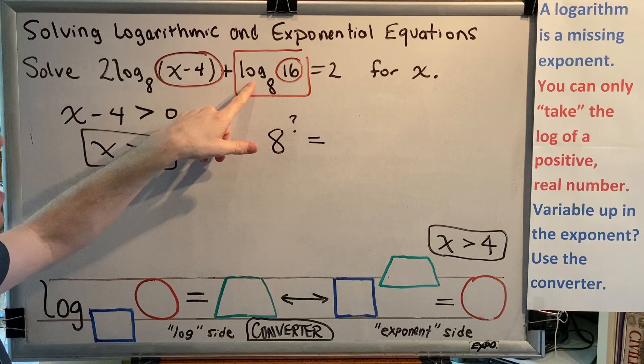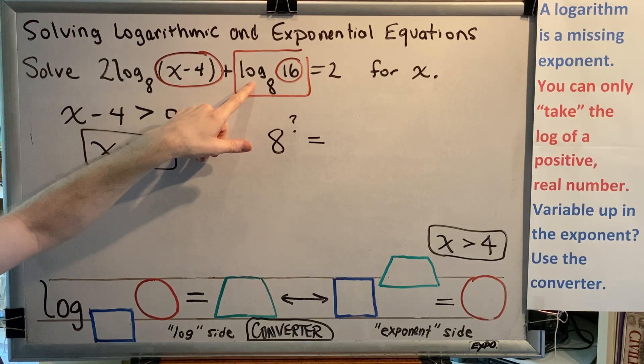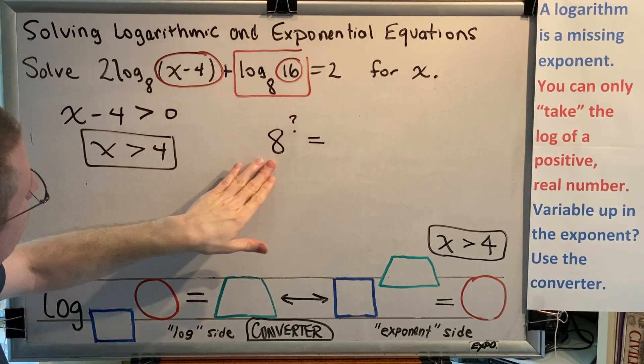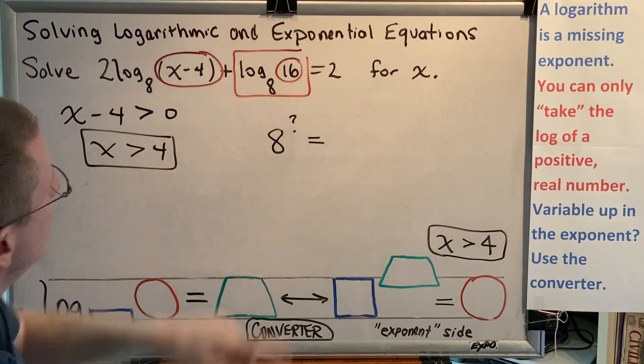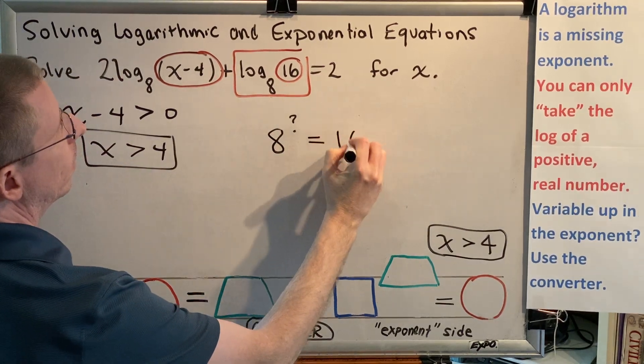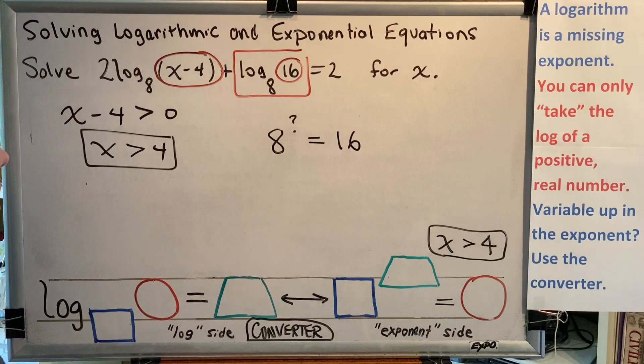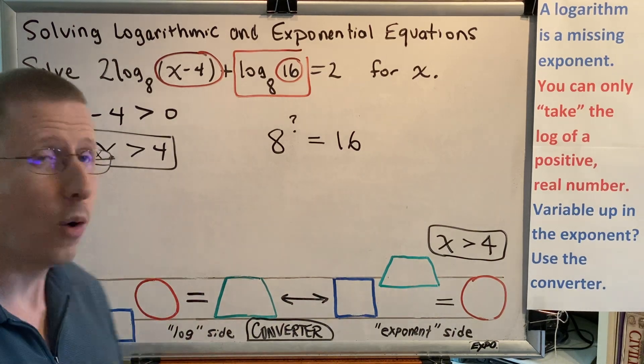Log is EGOB. EGOB is exponent goes on base. So what is the exponent goes on base 8 to make 16? 8 times itself, how many times, gives you 16? I don't know the answer to that.